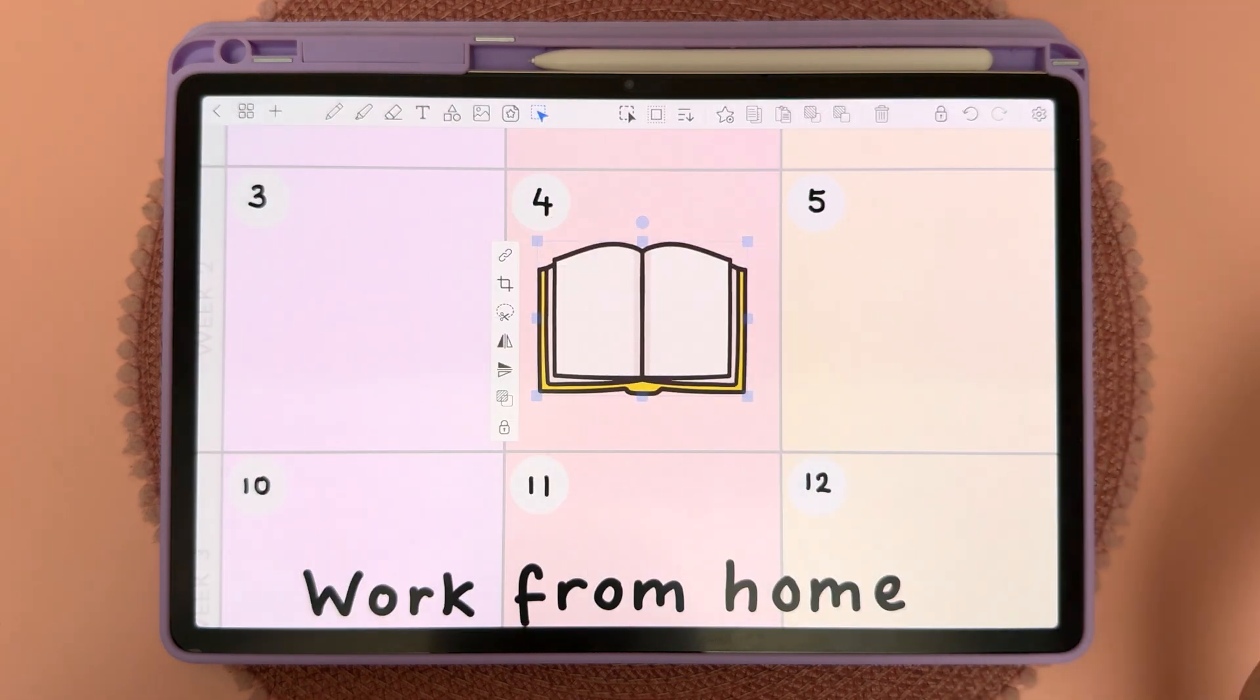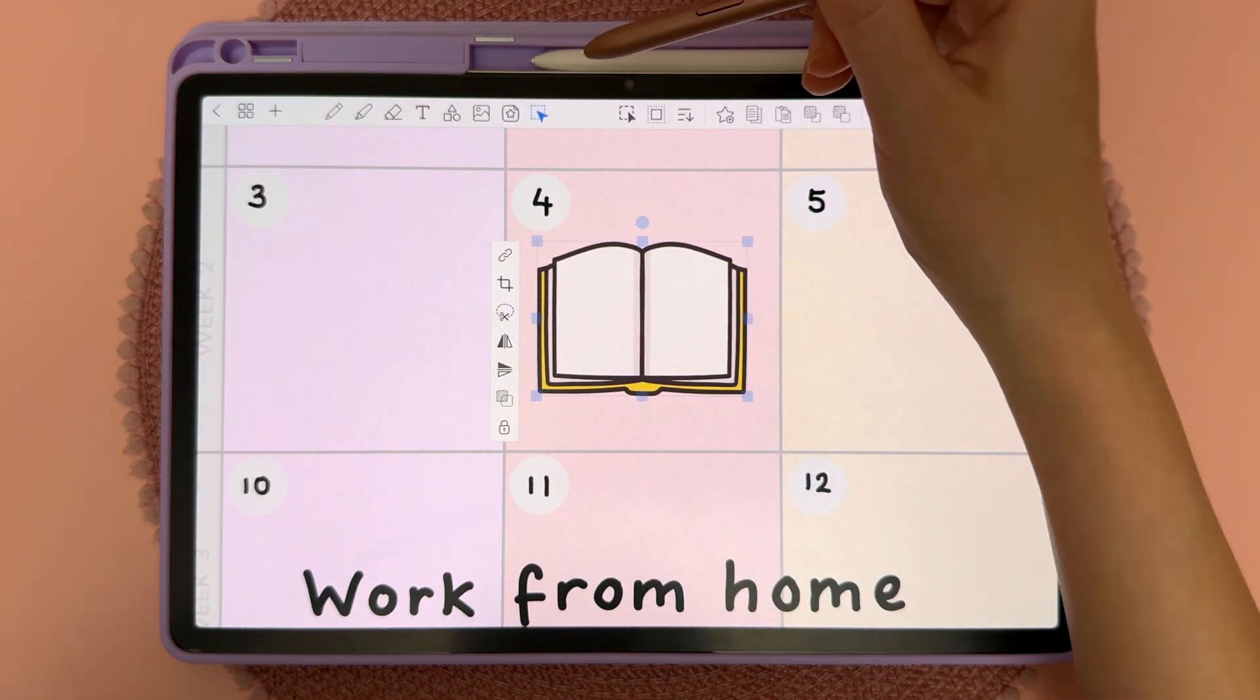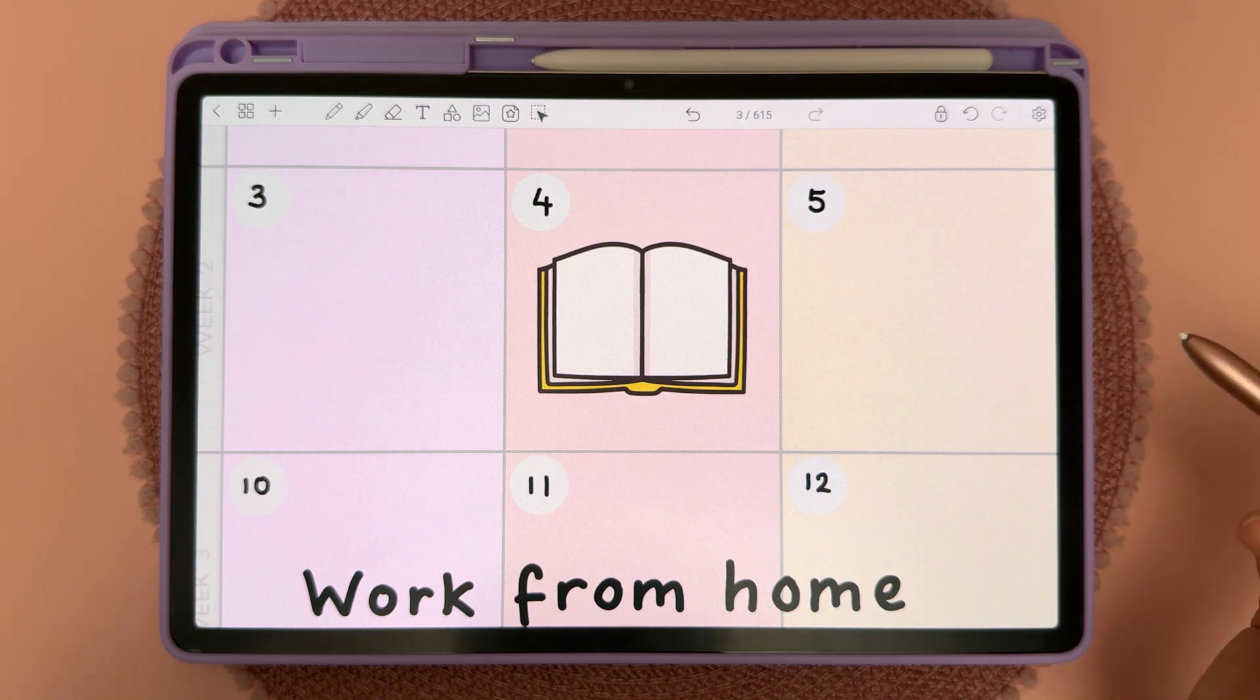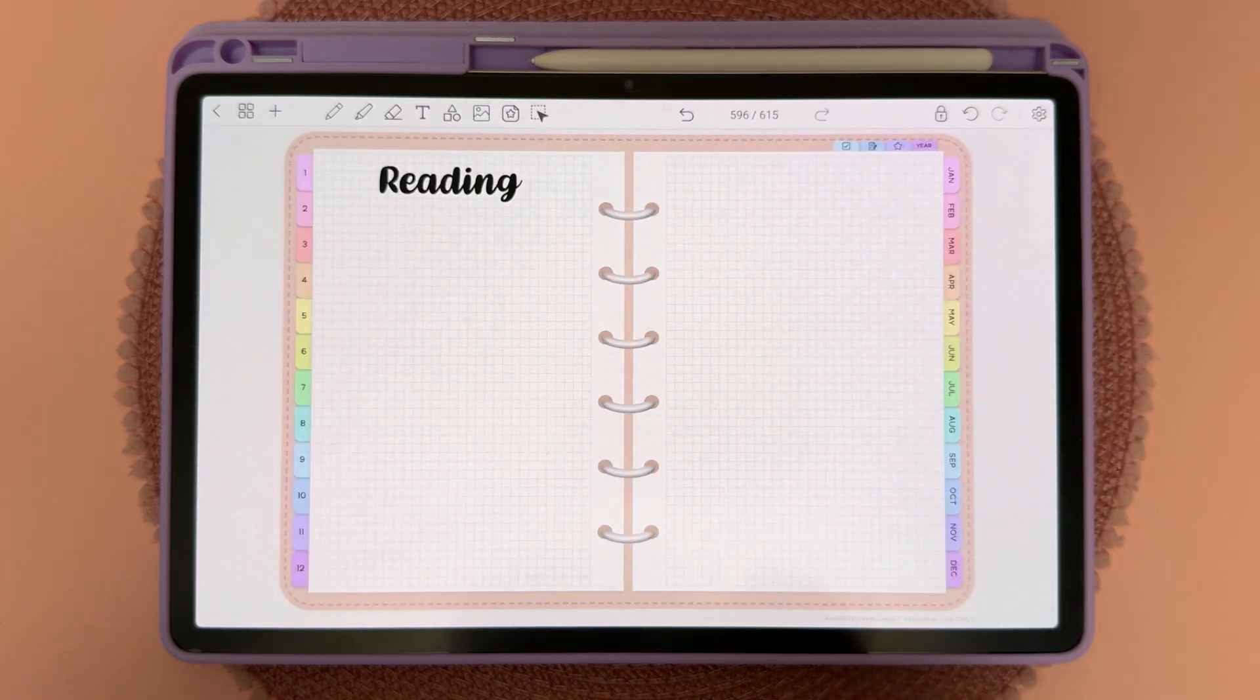Then tap OK. To use hyperlinks you need to be out of the select tool, so I'm just going to tap on it again to deactivate it. Now when you tap on that object, it's going to take you to that page that you just hyperlinked.